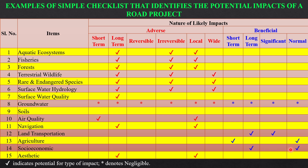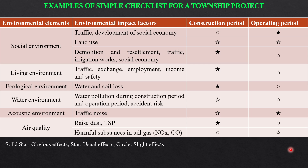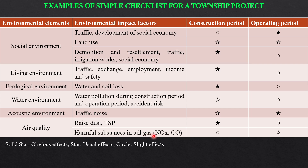Another example covers a township project, categorizing social environment, living environment, water environment, and air quality, each further classified into different impact factors. For air quality, particulate matter and dust during the construction phase show an obvious effect, while during the operational stage it is a slight effect. For gaseous oxides, during the construction phase it is a slight effect, but during the operational phase it becomes a usual effect.